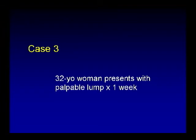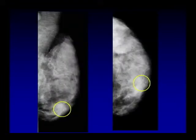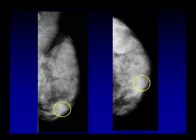Case three: a 32-year-old woman who presents with a palpable lump of one-week duration. Her breasts are dense — BI-RADS density 4, extremely dense. Remember the two types of BI-RADS categories: density categories (1 fatty, 2 scattered fibroglandular densities, 3 heterogeneously dense, 4 extremely dense) and assessment categories, which is the one element required in your BI-RADS report per MQSA.